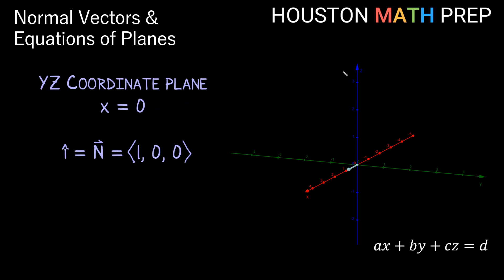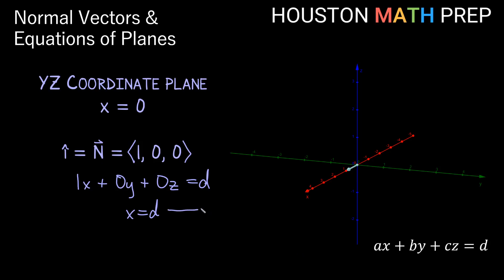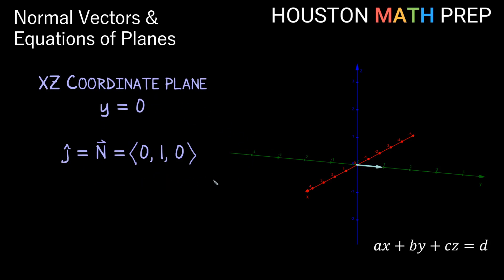Looking at the yz coordinate plane: i-hat, which sticks straight forward one unit on the x-axis and is written as (1, 0, 0), is normal to the yz plane. Using it as our normal vector gives 1x + 0y + 0z = d, simplifying to x = d. Since it goes through the origin, x = 0. Similarly, for the xz coordinate plane, j-hat (0, 1, 0) sticks straight out and is normal to it; its coefficient goes to y, giving y = 0.